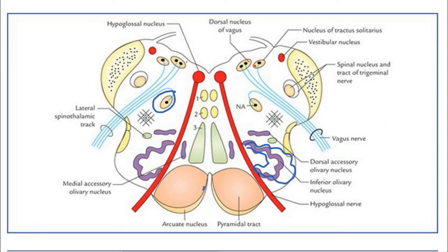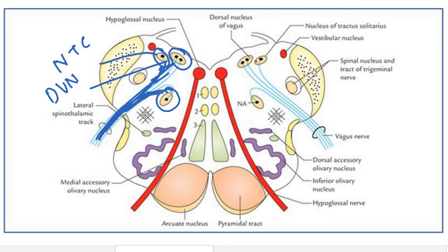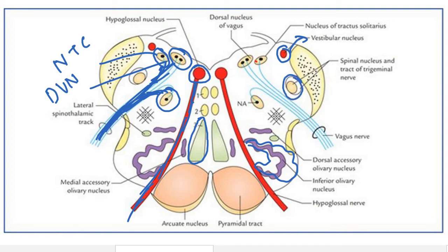In the cross section at the level of the olives, we can identify the nucleus ambiguus, the dorsal nucleus of the vagus nerve, the nucleus tractus solitarius, and the spinal nucleus of the trigeminal nerve. All four of these nuclei contribute to the vagus nerve — their detailed functions will be covered in the cranial nerve section. The nucleus of the hypoglossal nerve gives rise to the hypoglossal nerve.